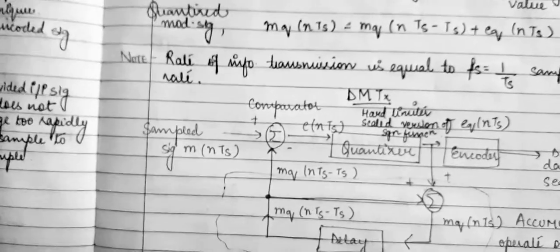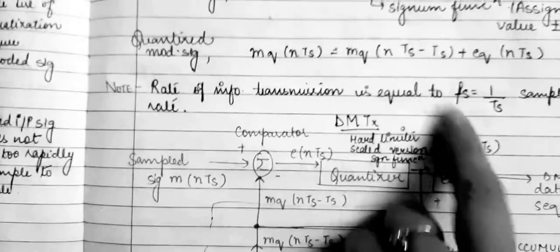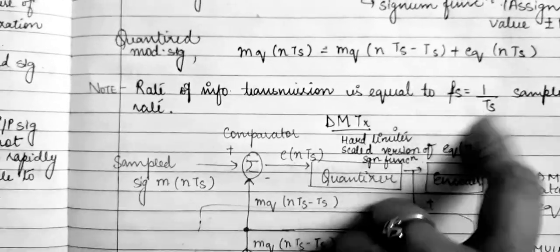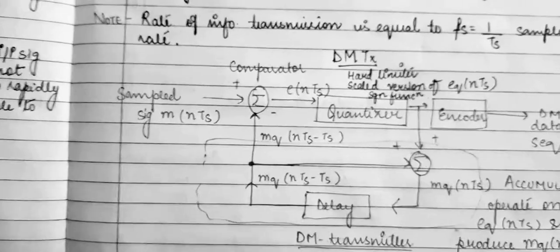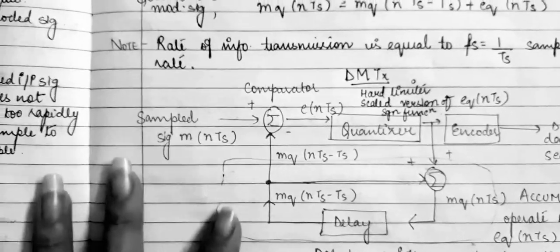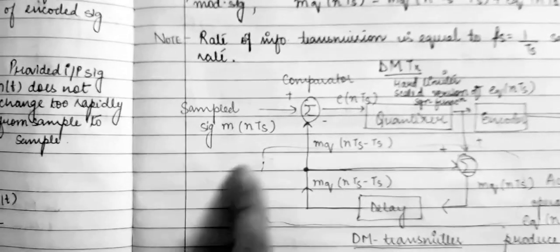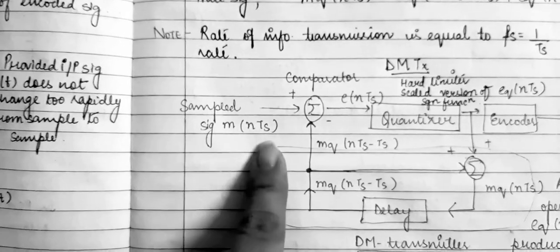We note that the rate of information transmission is equal to the sampling rate, which equals one upon Ts. Now coming on to the Delta Modulation transmitter: the input is the sampled version of modulating signal m(nTs).